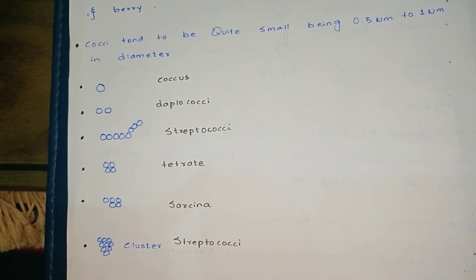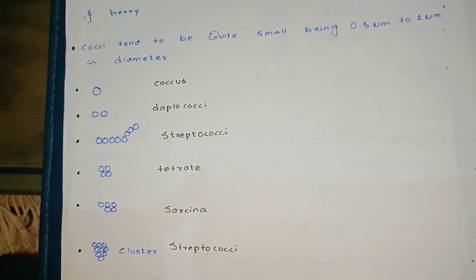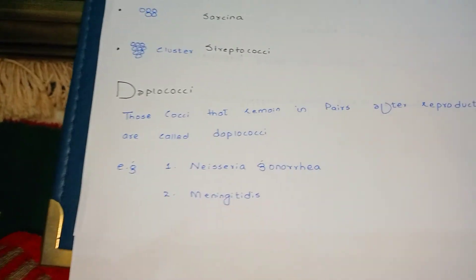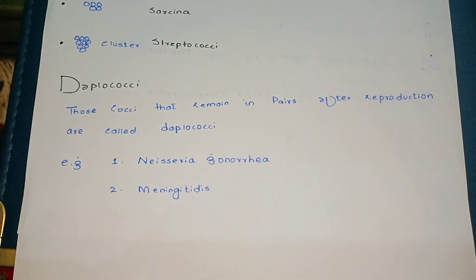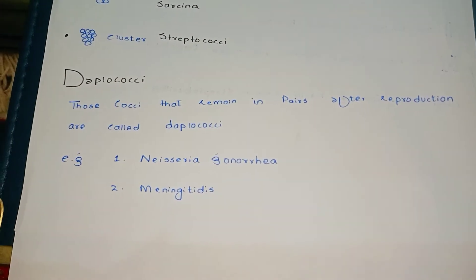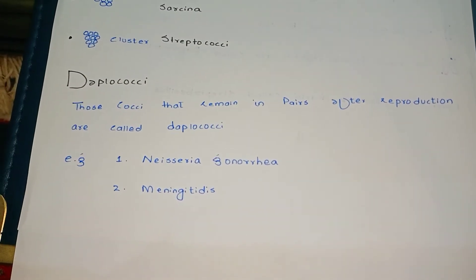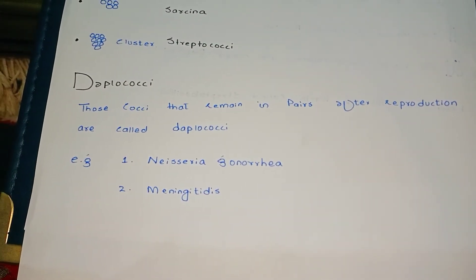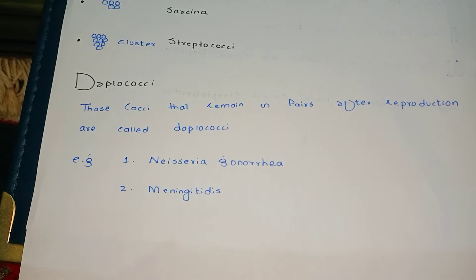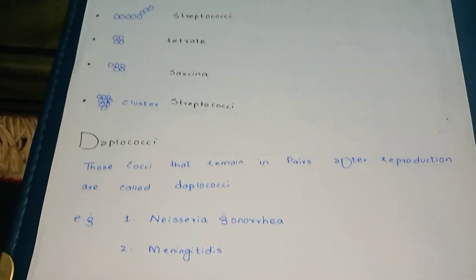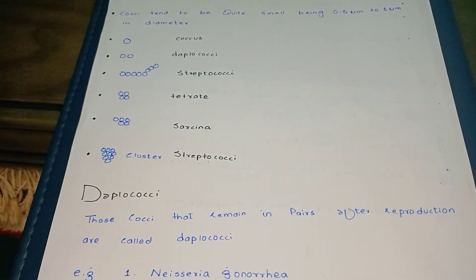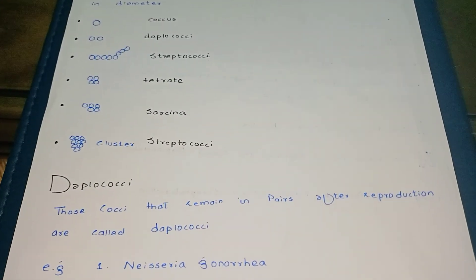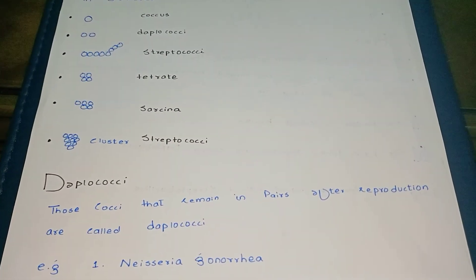Diplococci are those cocci that remain in pairs after reproduction. As I have already told you, they will be in pairs — they are called diplococci.